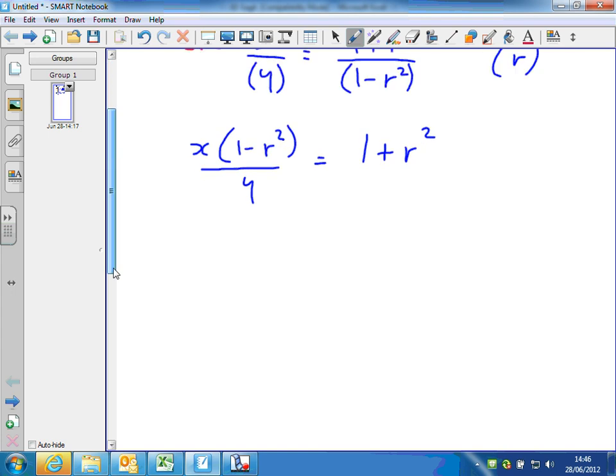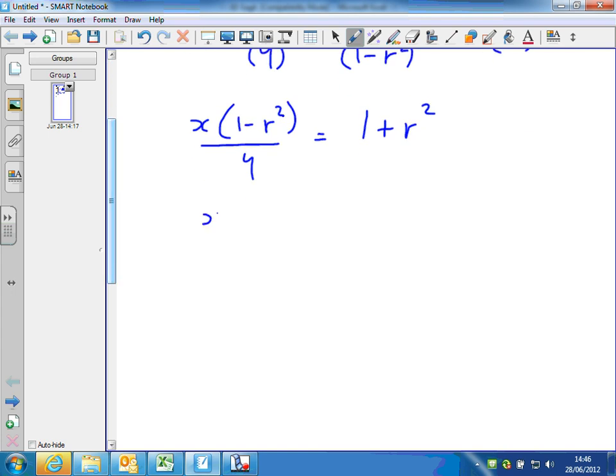Now multiply through by y. x times 1 minus r squared equals 1 plus r squared times y. So I've now got a formula that's got no fractions in it, which is good. The next step, expand out the brackets and then try and collect together like terms.